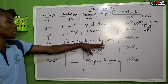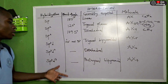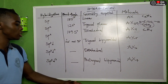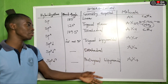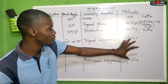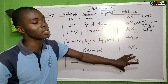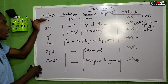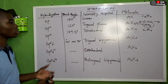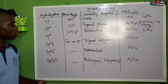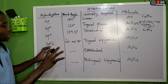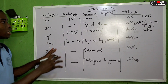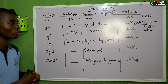For sp3d2, the shape is octahedral. For sp3d3, the shape is pentagonal bipyramidal. If you see any molecule, you can trace it back to its hybridization type by observing its geometry closely.